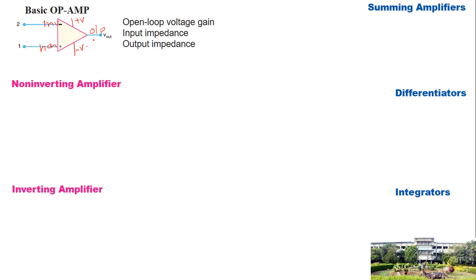There are three important characteristics of an op-amp. The open-loop voltage gain is very high — infinite for an ideal op-amp and a high finite value for a practical one. The input impedance is very high, infinite for ideal and on the order of 10^5 ohms for practical. The output impedance is very low — 0 ohms for ideal and less than 200 ohms for practical.